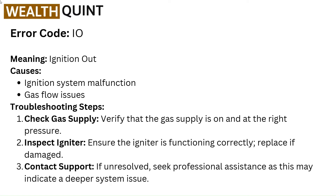Error code IO — meaning Ignition Out. Causes: ignition system malfunction, gas flow issues. Troubleshooting steps: Check gas supply — verify that the gas supply is on and at the right pressure. Inspect igniter — ensure the igniter is functioning correctly and replace if damaged. Contact support — if unresolved, seek professional assistance as this may indicate a deeper system issue.